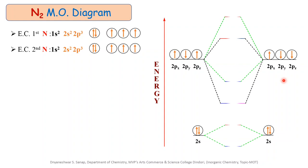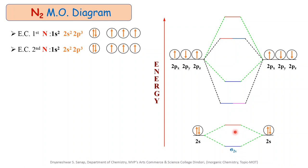Out of these 8 molecular orbitals, 4 are bonding molecular orbitals and 4 are anti-bonding molecular orbitals. When the 2s atomic orbitals combine together, they produce 2 molecular orbitals — 1 lower-energy bonding molecular orbital and 1 higher-energy anti-bonding molecular orbital. The lower-energy bonding molecular orbital is called the sigma-2s bonding molecular orbital, and the higher-energy one is called the sigma-star-2s anti-bonding molecular orbital.